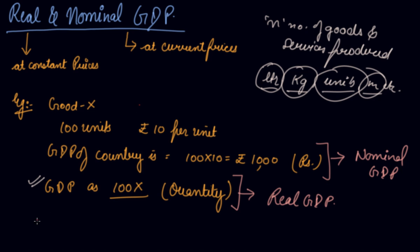The formula to calculate real GDP is: nominal GDP divided by your price index into 100. This is how you calculate your real GDP.